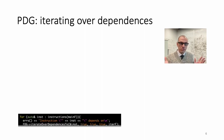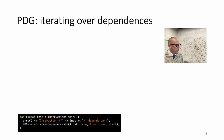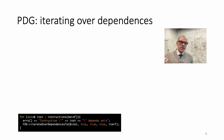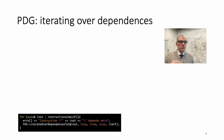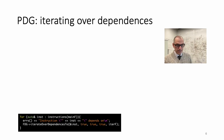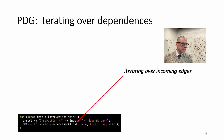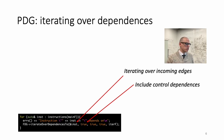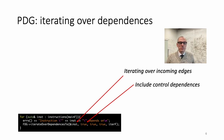Let's assume that you want to iterate over dependencies for whatever reason — you have many ways of doing that. One way is you have an instruction and you want to iterate over the incoming dependencies, or incoming edges in the dependence graph, that lead to the instruction you pass as input. So in this case, we want to iterate over all dependencies between another instruction and instruction inst.